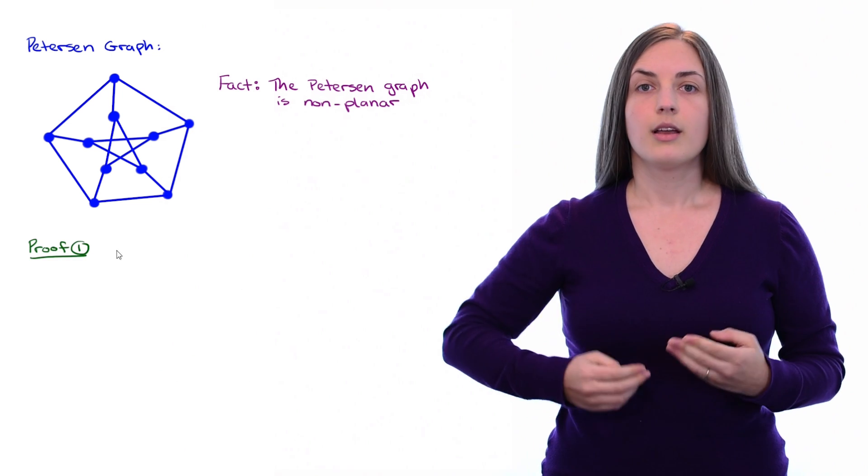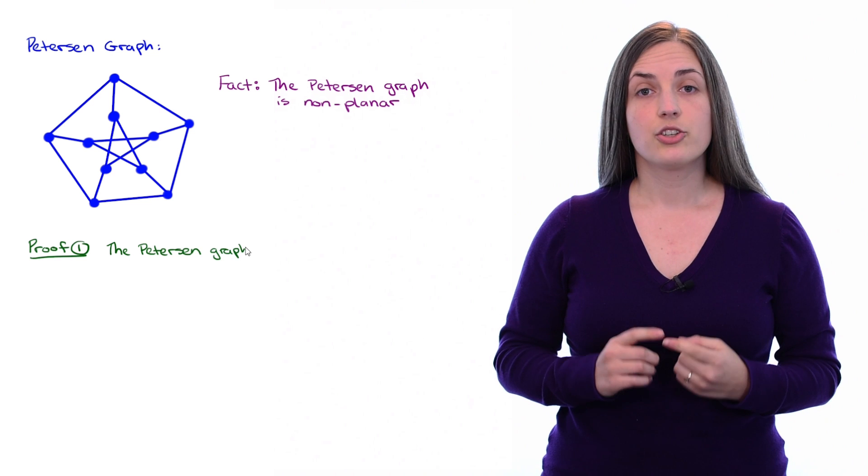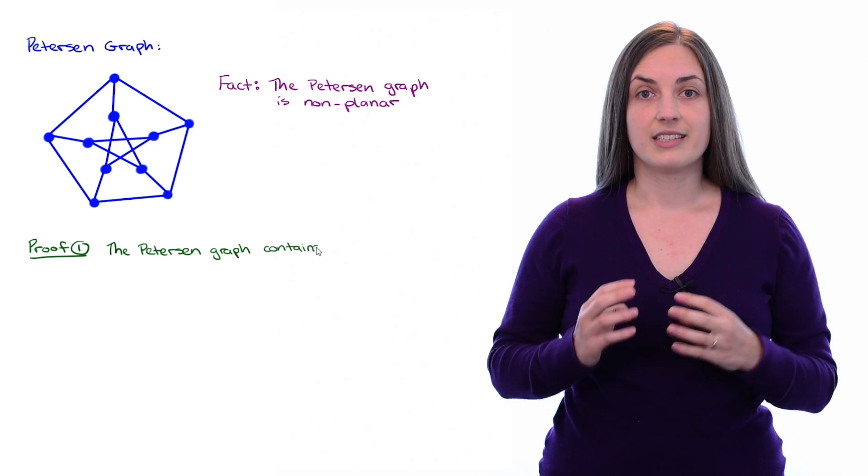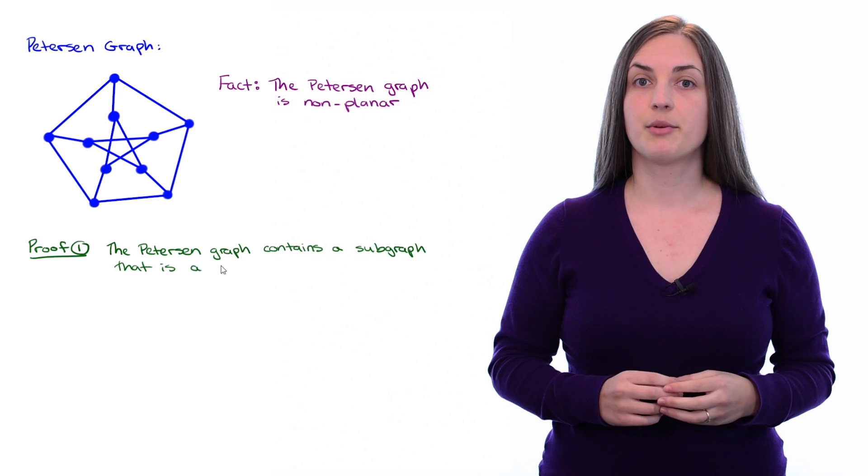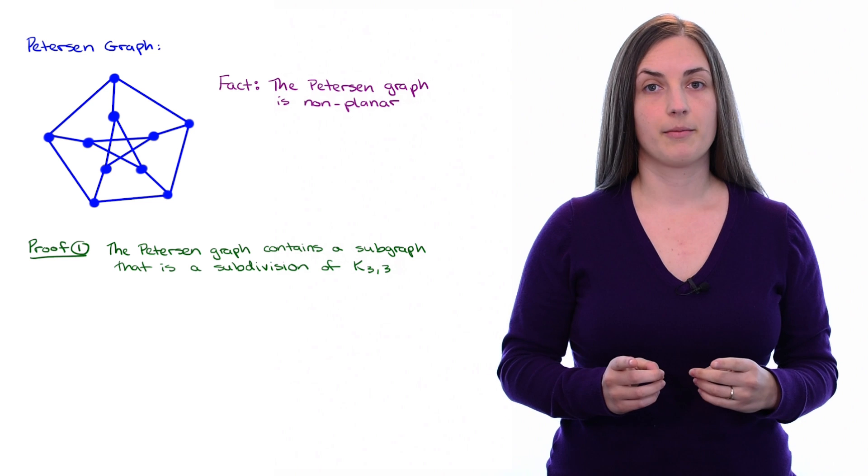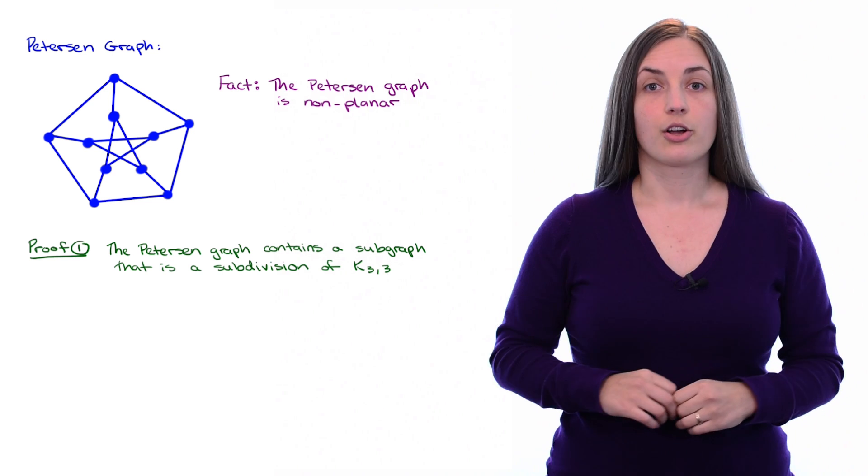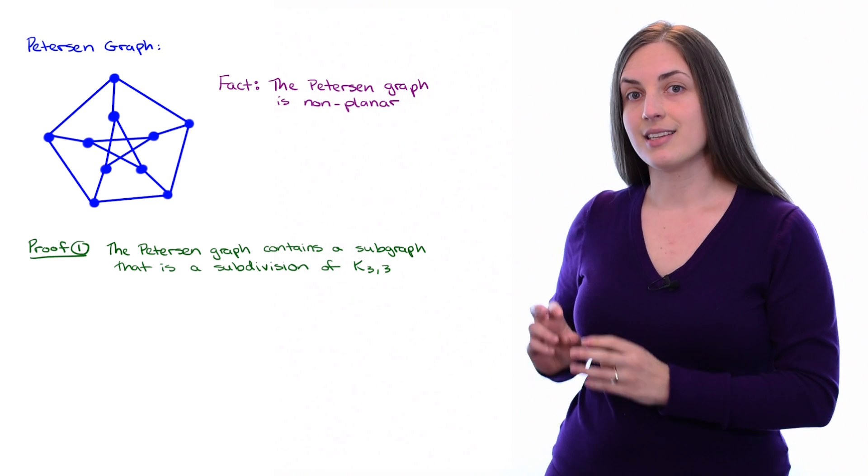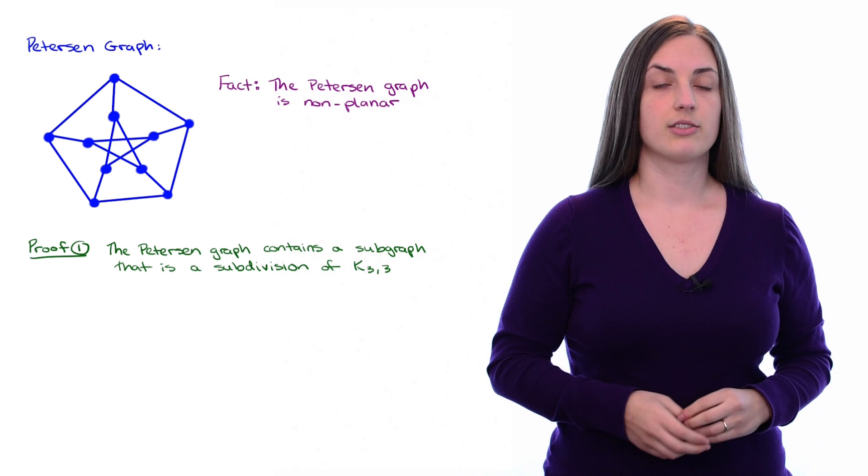Proof number one comes about because we can show that the Peterson graph contains a subgraph which is a subdivision of K₃,₃. Now that's going to rely on Kuratowski's theorem. Showing that it has such a subgraph is going to show that it's non-planar.